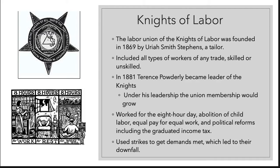The very first labor union on the scene was the Knights of Labor, founded in 1869 by Uriah Smith Stevens, who was a tailor. The goal of this union was to take any and all workers — all types, any trade, skilled or unskilled. Skilled workers were often educated, specialized workers — think engineers, plumbers, mechanics, doctors. Unskilled workers could be easily replaced; they didn't need a lot of training. But this union would take them all — anybody and everybody.